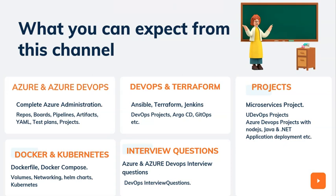I'm also going to share a couple of real-time projects — how to deploy microservices on a Kubernetes cluster, end-to-end projects like build, deployment, and monitoring of three-tier architecture, and multiple pipelines such as deploying a Node.js application, a React.js application, Java, and .NET applications with Azure DevOps, and how to deploy to the Azure Kubernetes cluster with Azure DevOps pipelines.